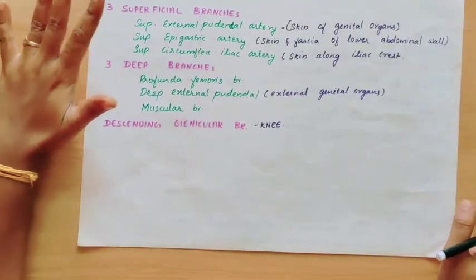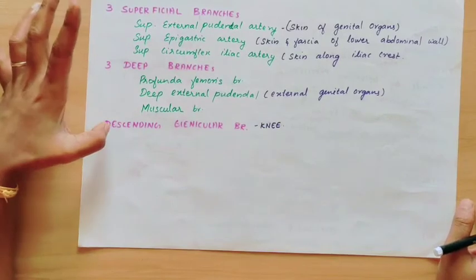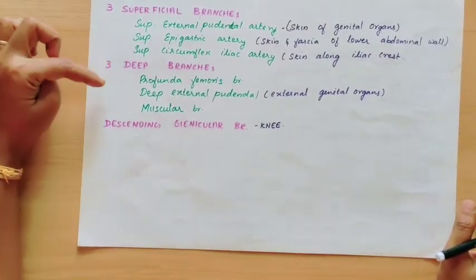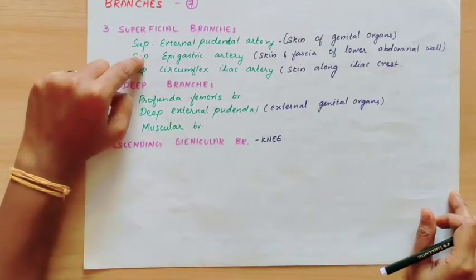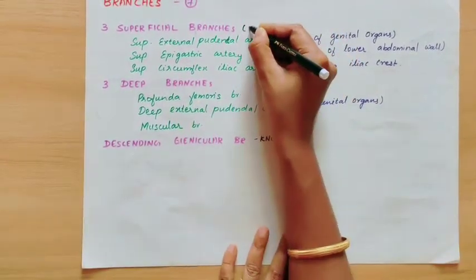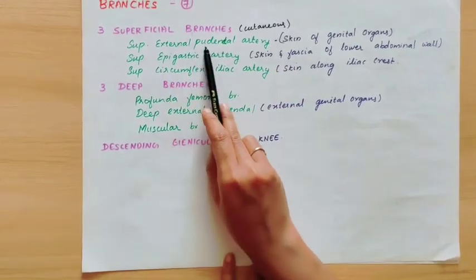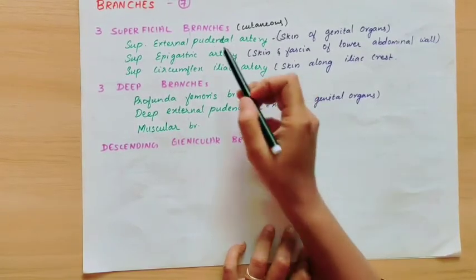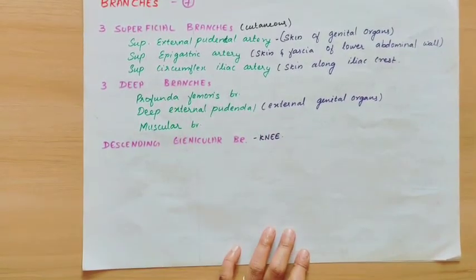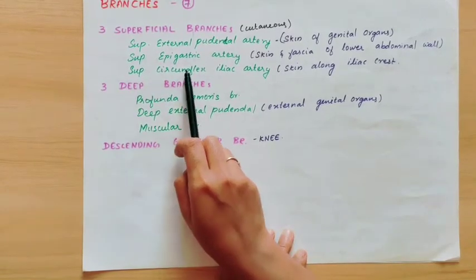Now coming to the branches. The femoral artery has three superficial branches and three deep branches, plus the descending genicular branch. The three superficial branches are cutaneous arteries: first, the superficial external pudendal artery, which supplies the skin of the genital organs; second, the superficial epigastric artery, which supplies the skin and fascia of the lower abdominal wall; and third, the superficial circumflex iliac artery.